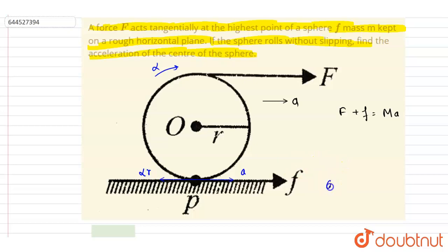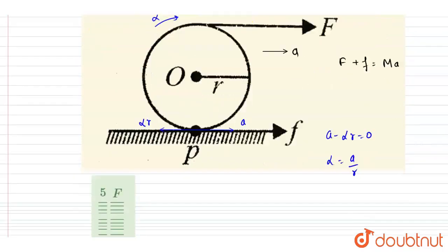So if I write down a minus alpha r, it should equal zero since point of contact P should have zero acceleration. From here you will get alpha equals a by r.